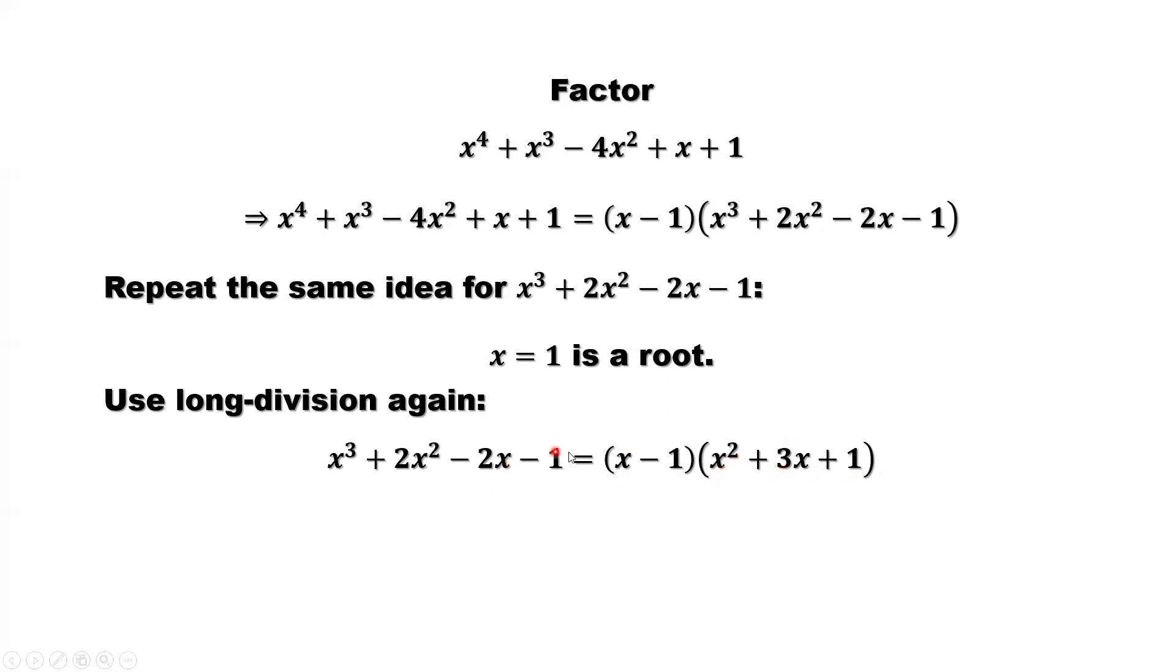So what is this? This is this part, the second part of our original polynomial. Original polynomial, we already factor x minus 1 out. So we factor another one from the second part. Put them together, you have x minus 1 squared.